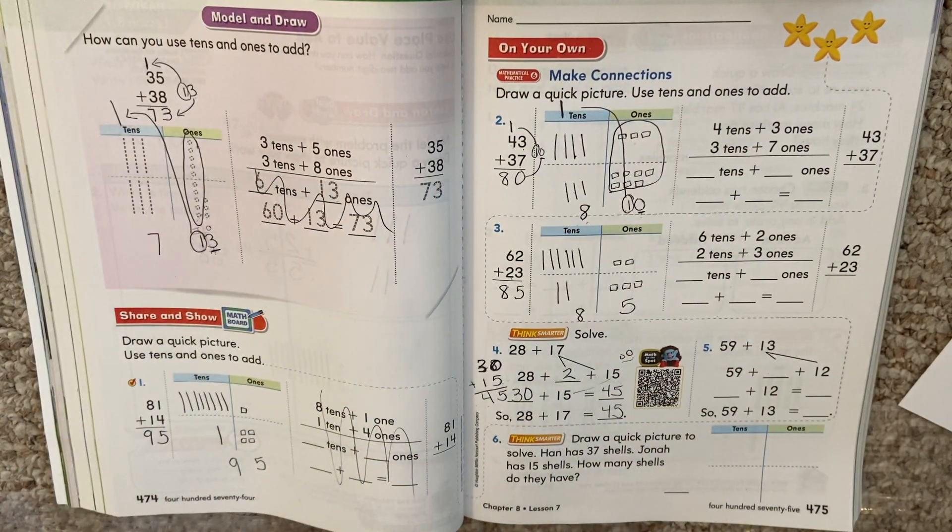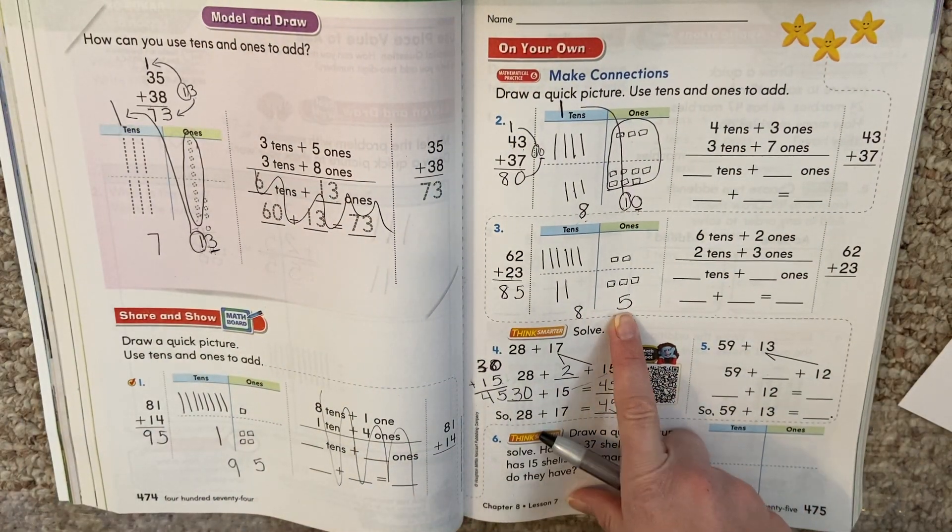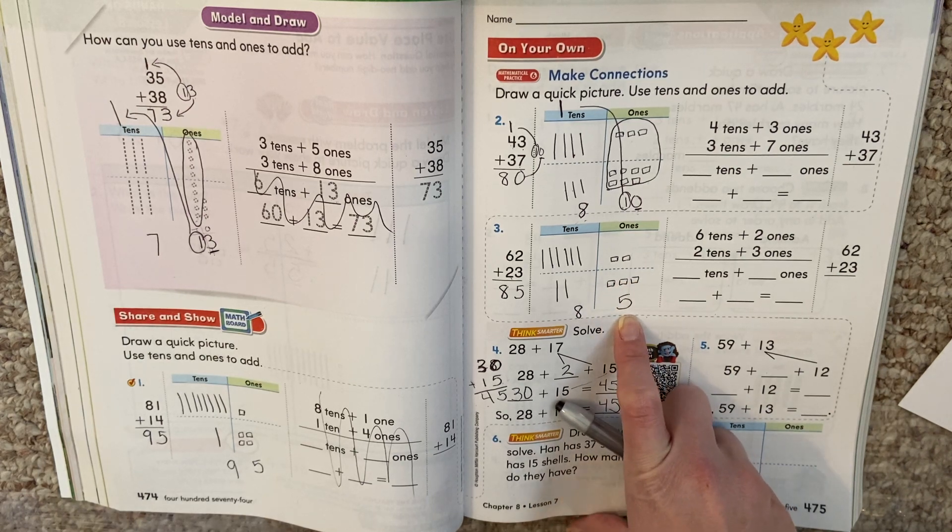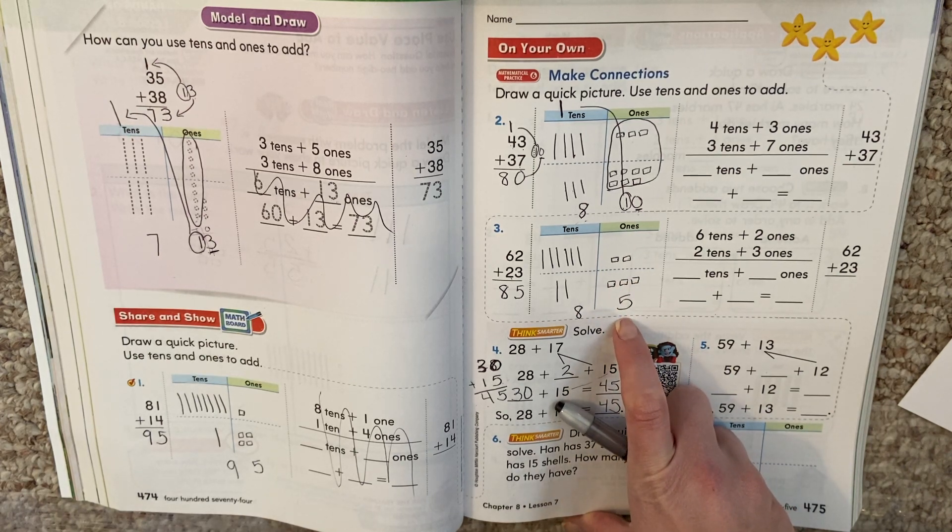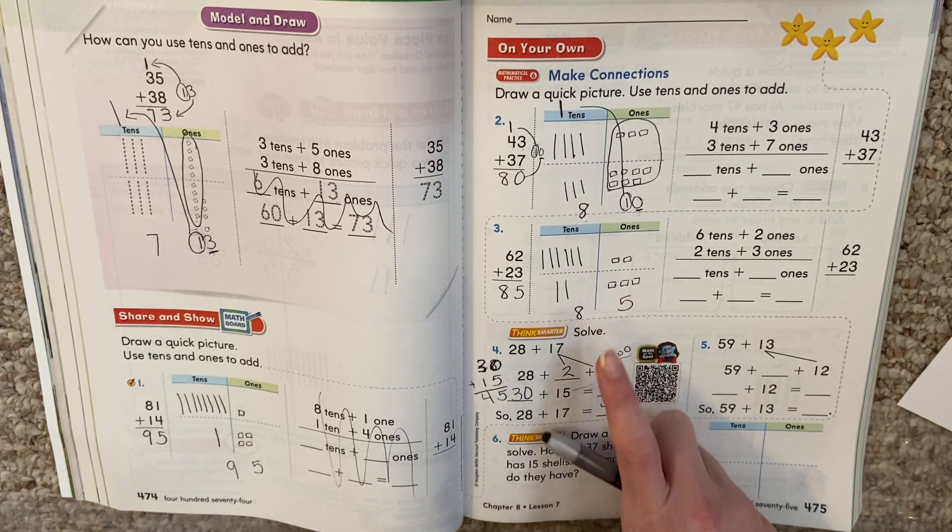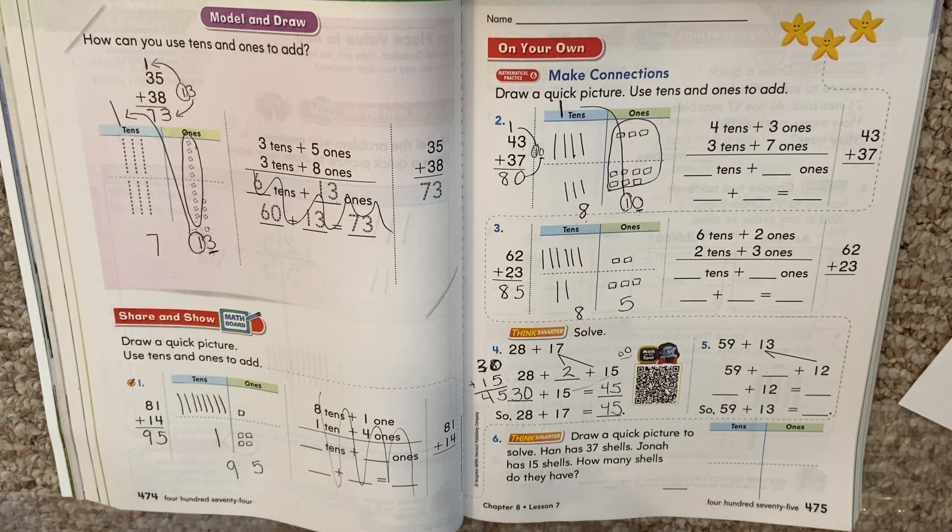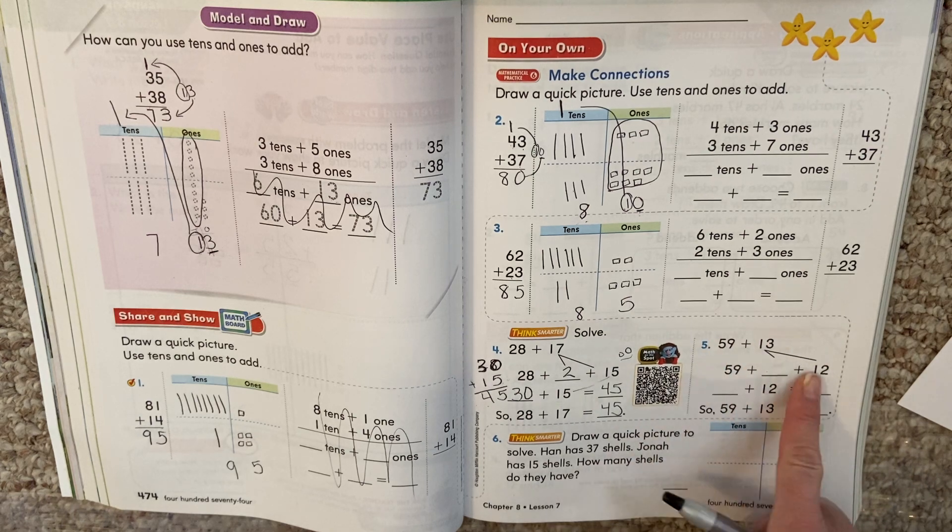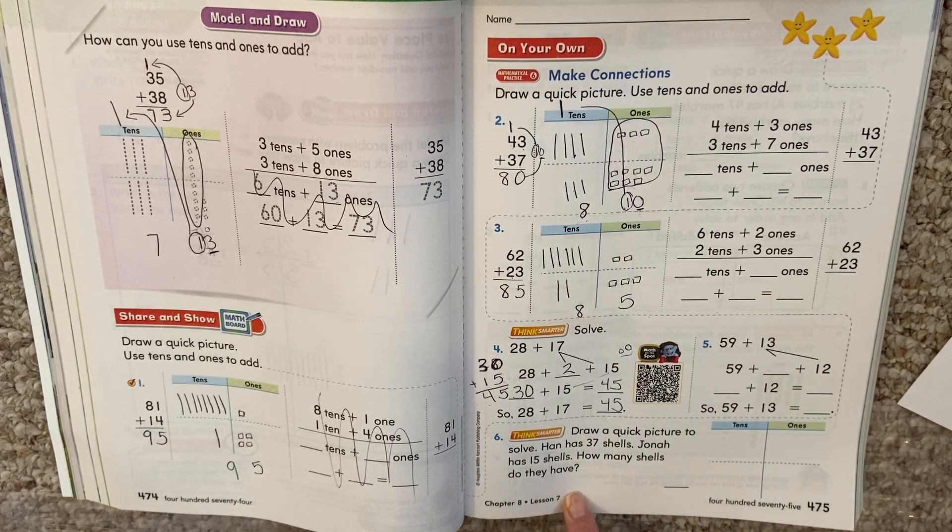And we also saw that sometimes it was fine, like this one. 2 plus 3 is 5, so we don't need to move anything. One digit is fine. That's our ones. So it's only when we have too many ones. So we are going to skip over this one right now. We're going to look down here at our Think Smarter.